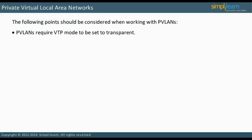PVLANs require VTP mode to be set to transparent. If traffic is not reaching the destination, it is possible that PVLANs are not configured on all appropriate switches along the traffic path. Set VTP mode transparent and manually configure the PVLANs on all appropriate switches, including all switches in the path. Ensure that PVLAN information of all switches matches.